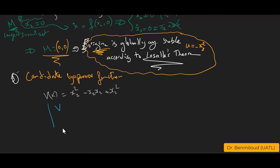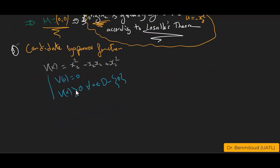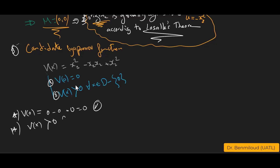To prove v(x) is a candidate Lyapunov function, we check two conditions: v(0) = 0, and v(x) > 0 for all x ≠ 0. The first condition is verified by substituting 0, giving v(0) = 0. The second condition requires proving v(x) is positive definite. Since v(x) is a quadratic function, it can be written as xᵀPx, and v(x) > 0 corresponds to proving that matrix P is positive definite.